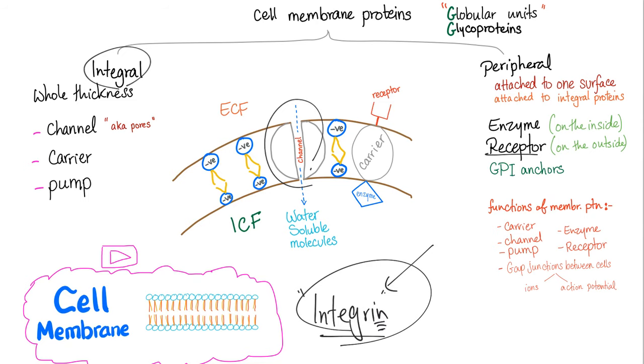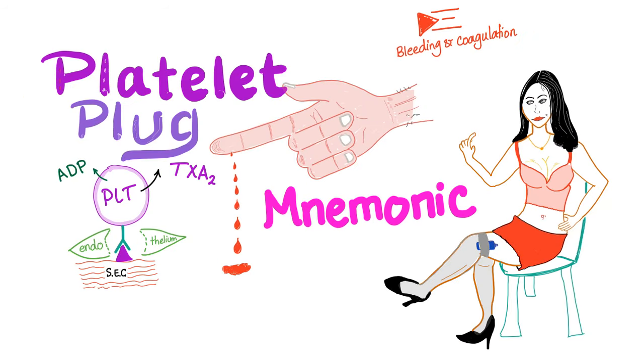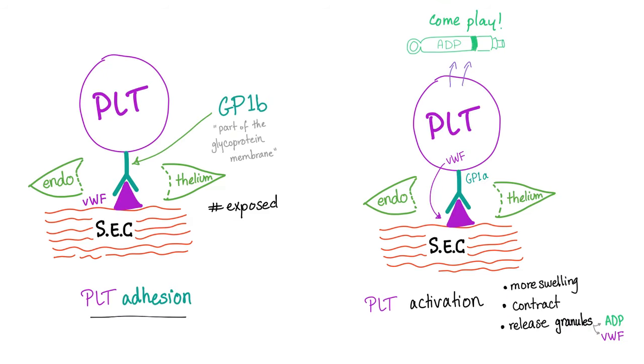As you know, hemostasis has many steps: vasoconstriction, temporary platelet plug, coagulation, fibrinolysis, etc. Temporary platelet plug is the story of the great receptor P2Y12, which is today's topic. I've talked about primary hemostasis in a previous video and there is a great mnemonic about the platelet plug. First, platelets adhere to the underlying subendothelial collagen via GP1B, which is a receptor on the platelet.